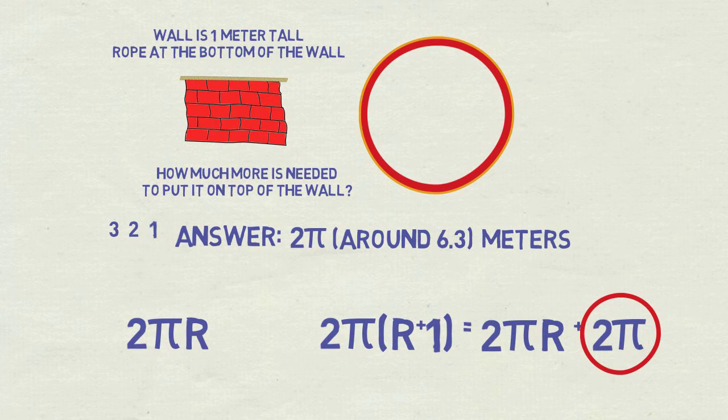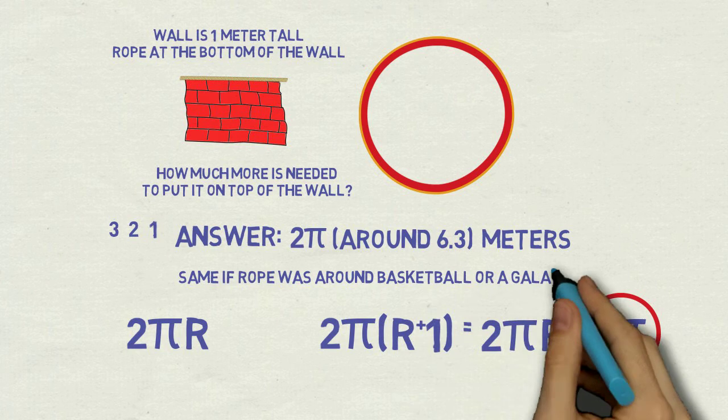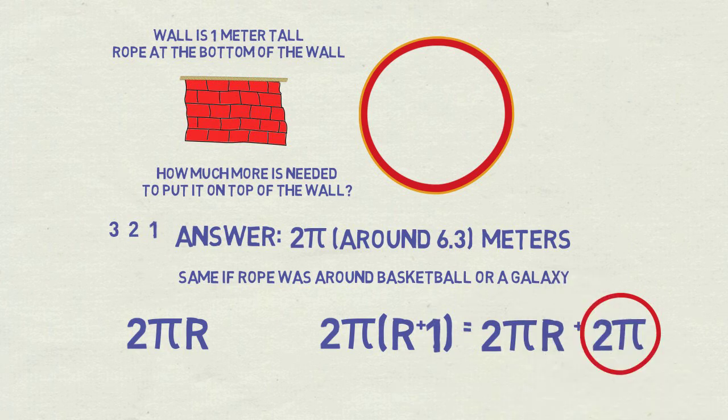It's counterintuitive, but increasing by 1 meter radius of a rope around, let's say, a basketball will require as much additional rope as if it was around whole galaxy, just above 6 meters. Quite interesting, isn't it?